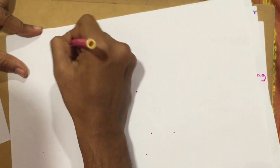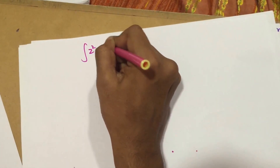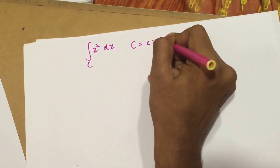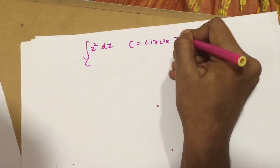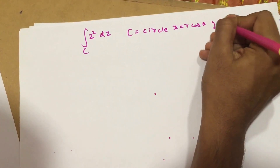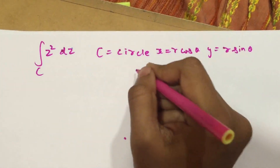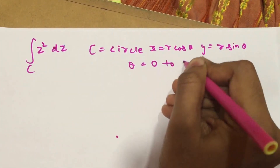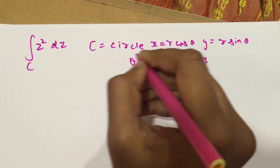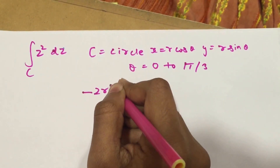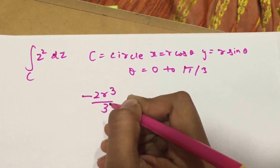I'll give you guys a practice problem. Evaluate ∫z²·dz, where C is a circle with x = R·cos(θ) and y = R·sin(θ), from θ = 0 to θ = π/3. Try to solve this — you should get the answer −2R³/3.